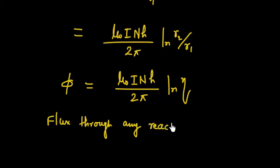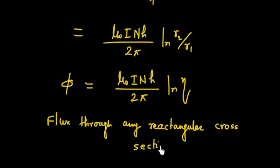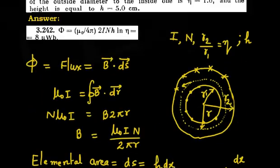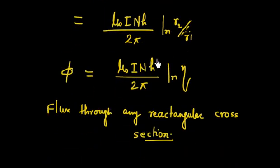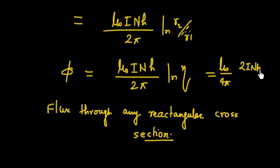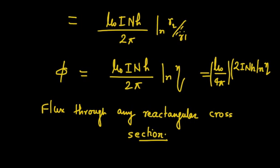So this is any rectangular cross section. We needed integration because the magnetic field was not constant — it is a function of x. Remember the formula: magnetic field in a toroid is μ₀NI / 2πx. We can also rewrite the result as Φ = (μ₀/4π) · 2NIh · ln(η), where μ₀/4π looks like a universal constant. This is the final value.